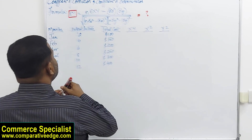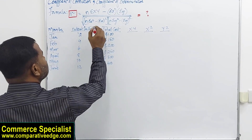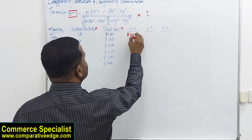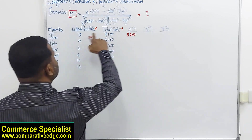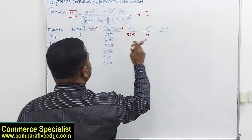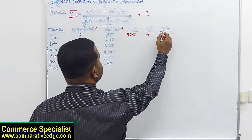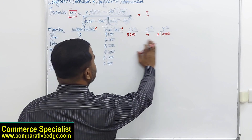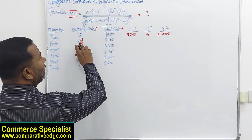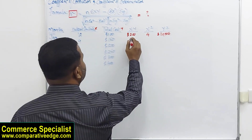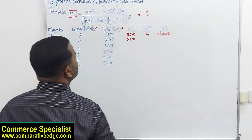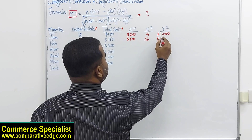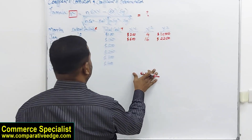Looking at the question, we have months, number of units (x), and total cost (y). Additional columns are required. For x times y: 2 × 100 = 200. For x²: 2 × 2 = 4. For y²: 100 × 100 = 10,000. Likewise, 4 × 150 gives x·y = 600; x² = 16; y² = 22,500. You complete the entire table this way.